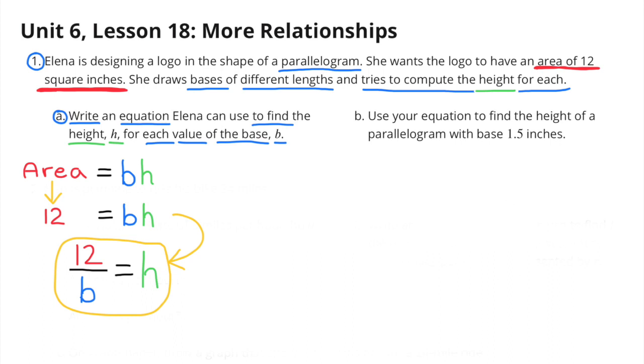Well, the area equals base times height, and they gave us the area, which is 12. So to find the area, you'd have to multiply base times height. But if you needed to find the value for the height, you would divide the area by the base, or 12 by B. So the equation that Elena can use would be 12 over B equals H.